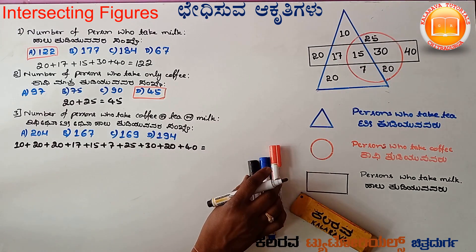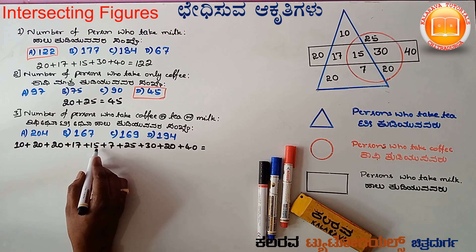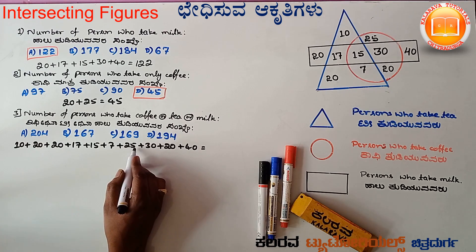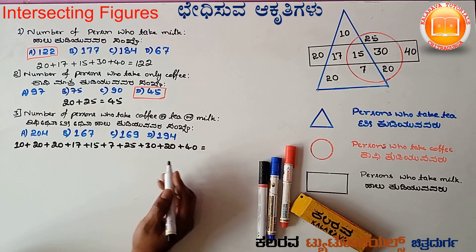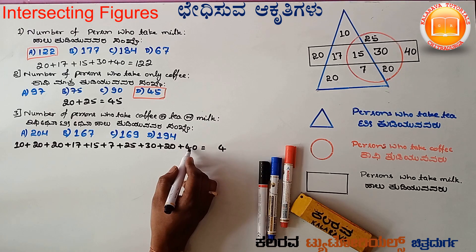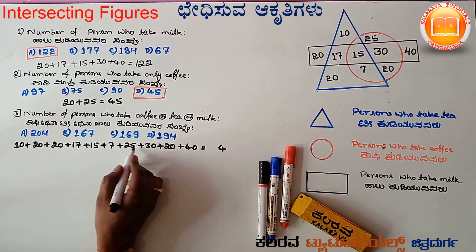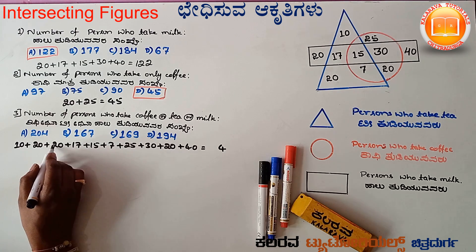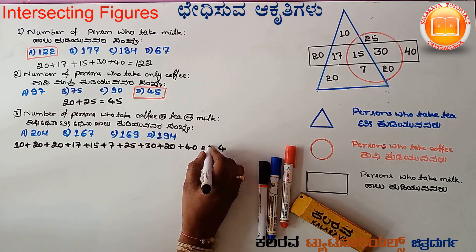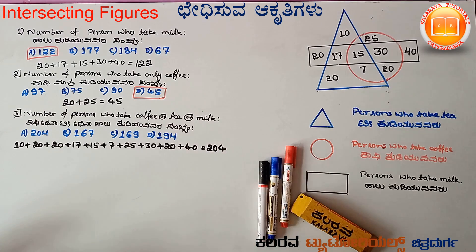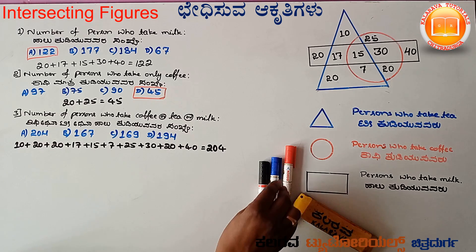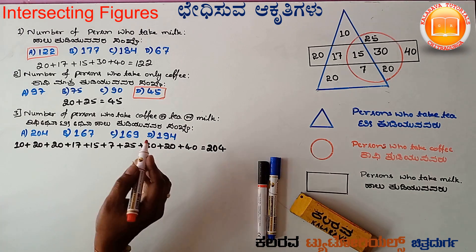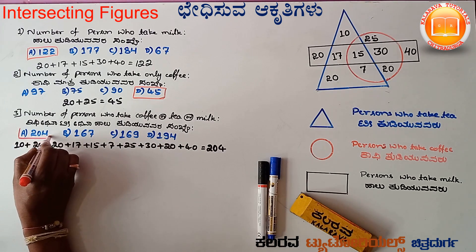Adding step by step: 5 plus 7 plus 5 gives 12, plus 5 is 7, then 19, plus 5 is 24, then 4 giving 2, then 4 plus 2 is 6, then 2 then 8, 8 plus 3 is 11, 11 plus 2 is 13, 13 plus 1 is 14, then 15, then 17, then 19, then 120, giving 204. The persons who drink any one of coffee or tea or milk total 204.